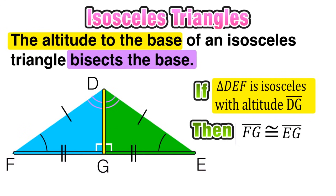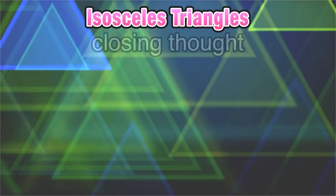If we think about this in terms of two congruent right triangles back to back, we know that their bases are both going to be the same, so this should make sense. It corresponds with our conceptual understanding of what an isosceles triangle is and the relationship between its angles and sides.